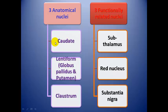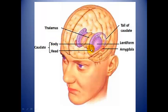We start with the caudate nucleus. As you can see here, it is C-shaped — inverted C-shaped — and lying in its concavity is the lentiform nucleus. This is the head of the caudate, this is the body, and this is the tail. As you can see, the tail of the caudate and the amygdala are continuous with each other.